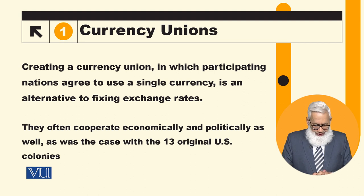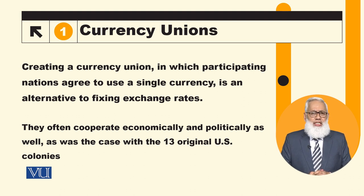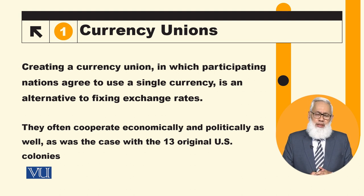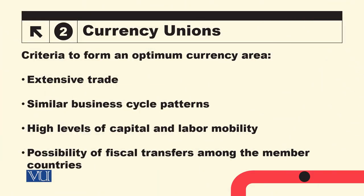As was the case with the 13 original U.S. colonies — this is the first example of a currency union, where the 13 states agreed to a common currency. So what is the criteria to form an optimum currency area? Under what conditions will a common currency area be optimum?